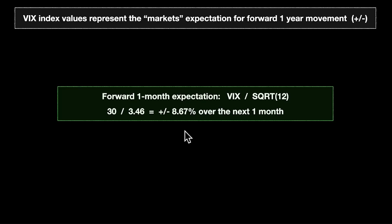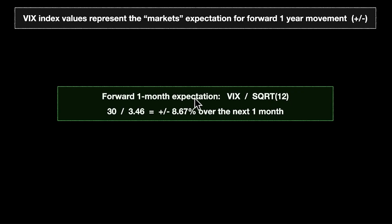Because it's an annualized number, it's easy to calculate different time frames. If you want to know how much the market is pricing for a one-month move — remember, the VIX uses a 30-day option strip but is annualized — you simply divide by the square root of 12, because there are 12 months in a year. The square root of 12 is 3.46, so a VIX of 30 implies an S&P 500 move of plus or minus 8.67% over the next one month.